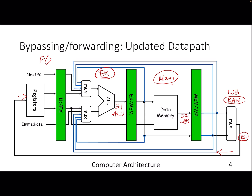What we can do is add a new data path — the blue lines show the new path, let's call it a bypassed path. It adds another data path from the output of the execute stage — more precisely, from the execute-memory stage latch — into the input of the ALU stage.